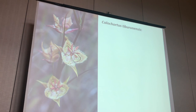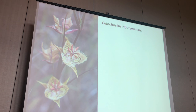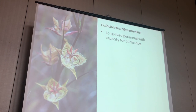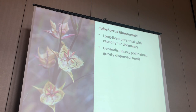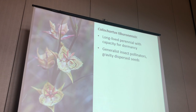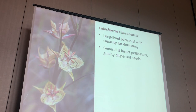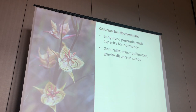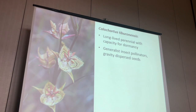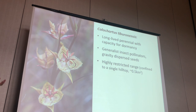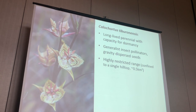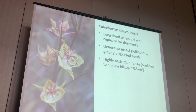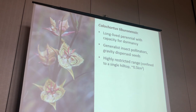The plant that Sarah works with is Calochortus tiburonensis. It is a long-lived perennial with the capacity for dormancy. It's pollinated by generalist insects, so bees and honeybees mostly, but it also has gravity-dispersed seeds. So there's this potential for pretty good gene flow by pollination, but also the potential for low gene flow through seed dispersal, because seeds rarely fall more than just a couple centimeters from the maternal plant. What's really striking is that the entire range of this species is restricted to a single hilltop in Marin County that is roughly half a kilometer squared — that is the global distribution for this species.